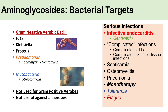For the last two indications — tularemia and the plague (Yersinia pestis infections) — aminoglycosides can actually be used as monotherapy. We generally use either streptomycin or gentamicin, and no other antibiotic is needed.